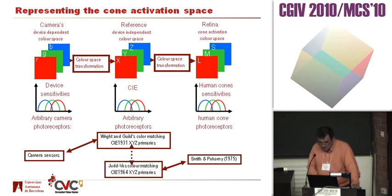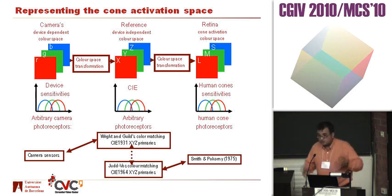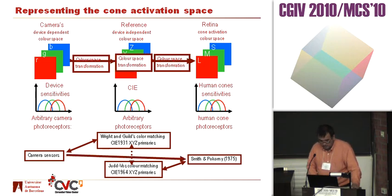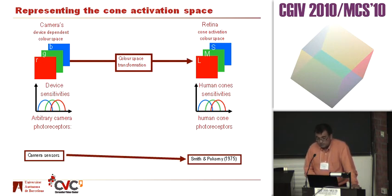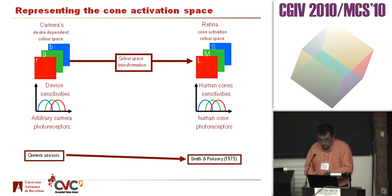What we did in the end was, instead of having all these transformations which introduce error, to calibrate our camera directly into LMS — basically to take the sensor responses and map them into LMS cone-activation space. We used Smith and Pokorny, but we could use another one if needed.